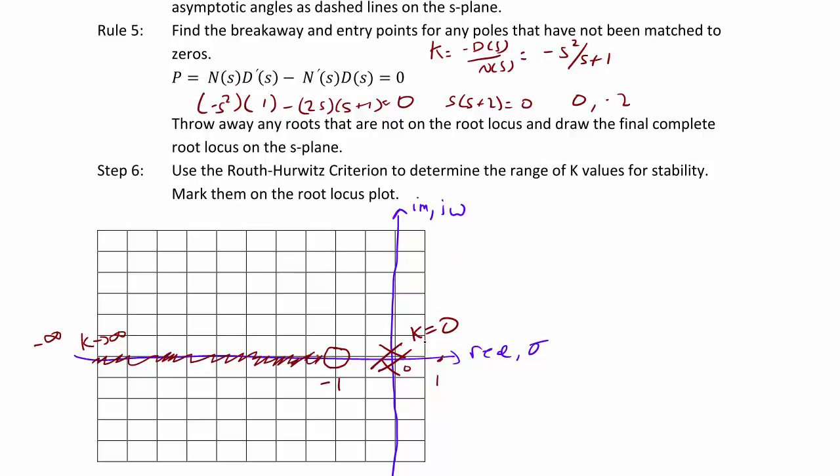So to show these on our graph, what we have here is the two double poles split apart right at 0, and they curve away like this. That's the breakaway point at 0, and then they break back into the real axis at negative 2. When they break back in, the poles split again. One of them heads to negative infinity, and the other one heads to the zero at negative 1.